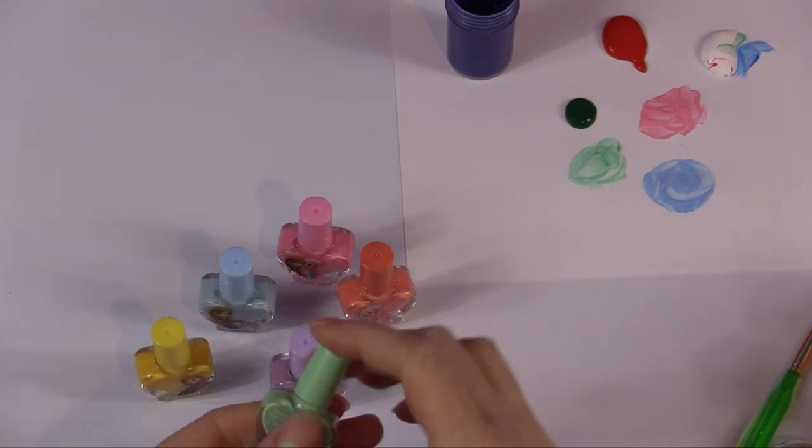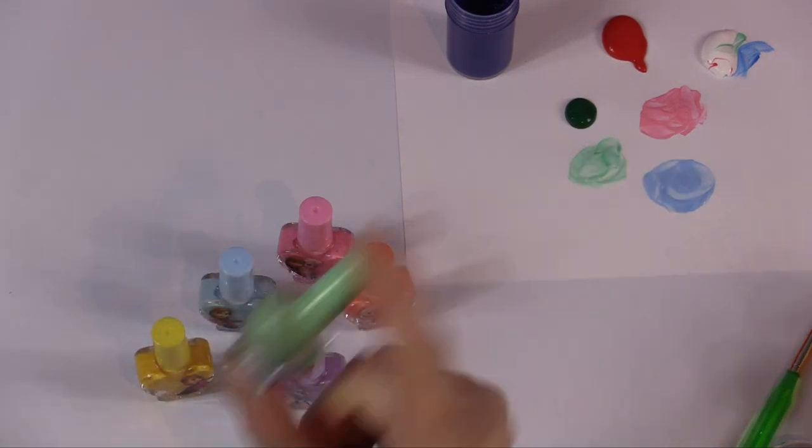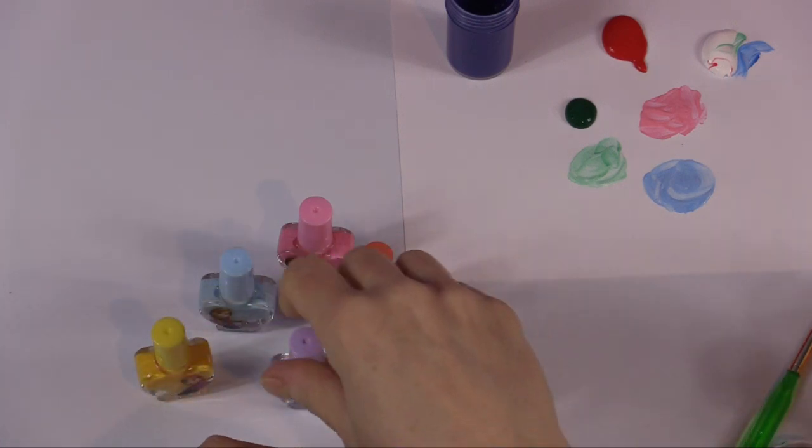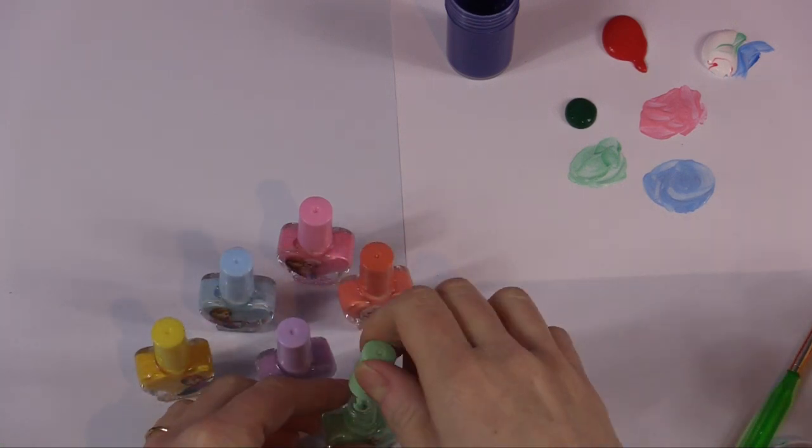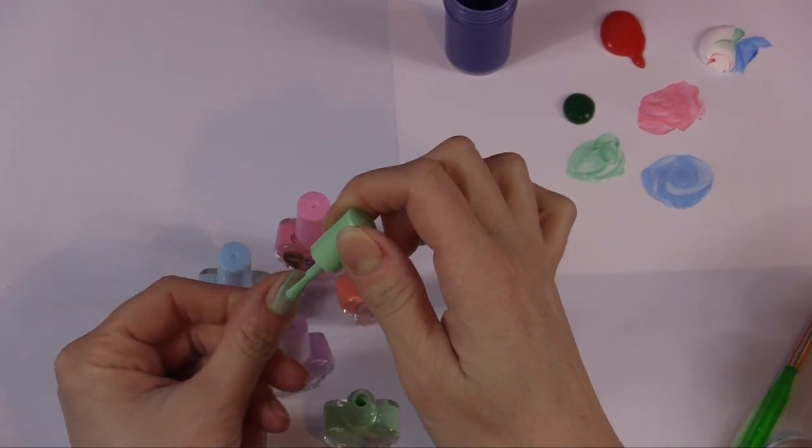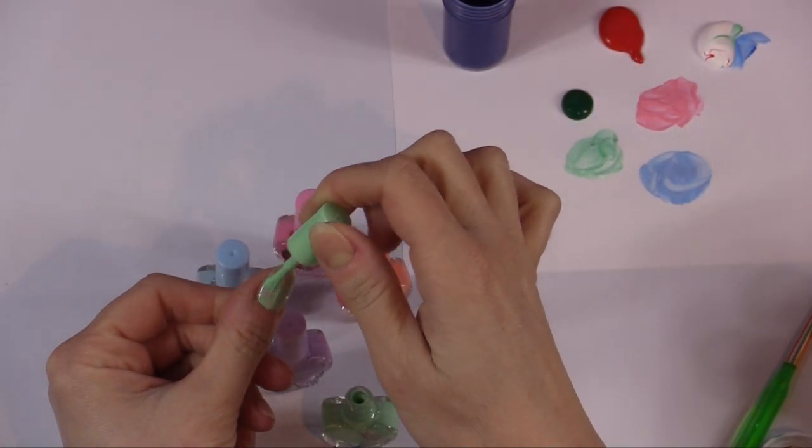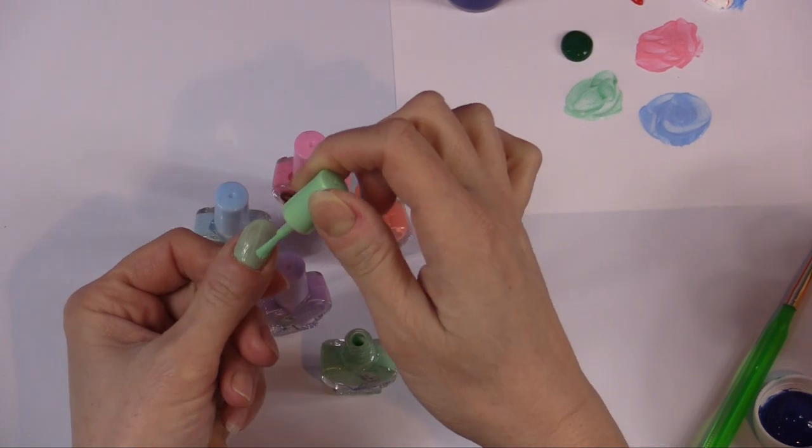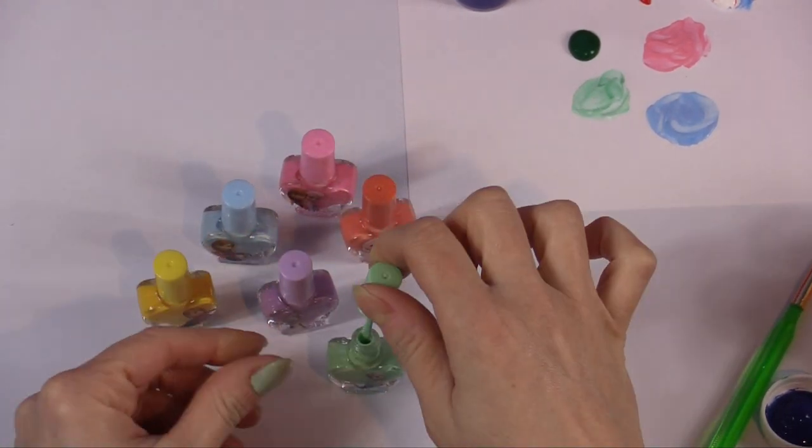Now let's try out these paints. First, we shake them up. This one has Elsa on it. Let's try it out on the thumb. We'll have a light green thumb for Green Thumb Adventures. Let's paint. Oh, it's a light pastel green. Isn't that pretty?